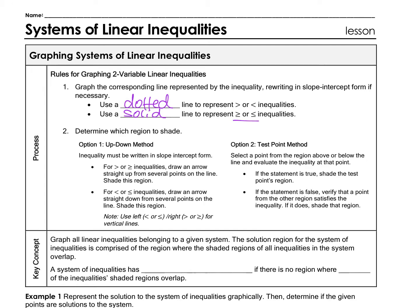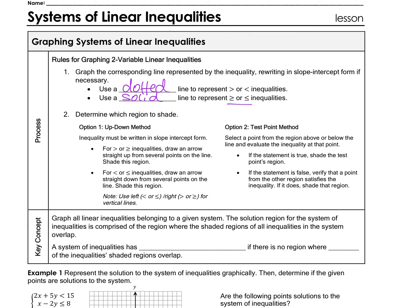To determine which region to shade, I'm going to use option one — though you're welcome to use option two, which is a test point. I'm always going to look at my greater-than inequalities and shade above the line. If it's less than, you're going to be shading below.